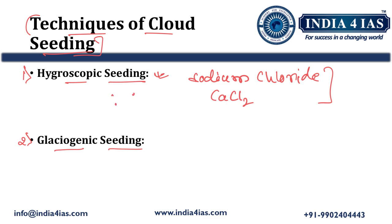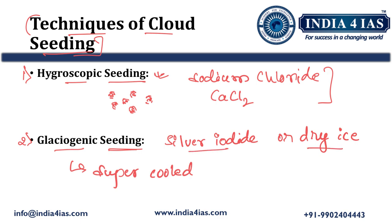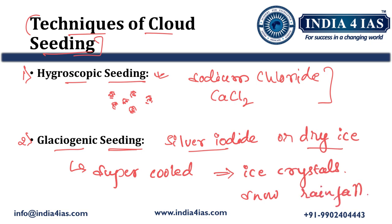Sodium chloride and calcium chloride salts are sprayed; they attract the water, grow in size, form clouds, and cause precipitation. In the glaciogenic seeding technique, we use silver iodide or dry ice, dispersed into supercooled clouds. These substances encourage the formation of ice crystals, which grow in size and eventually fall either as snow or as rainfall.